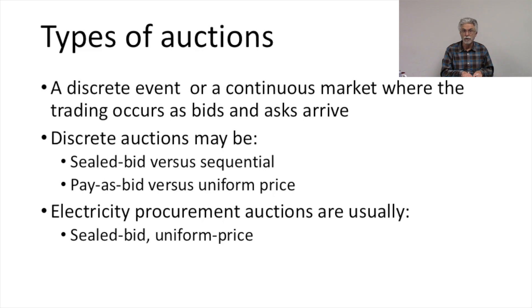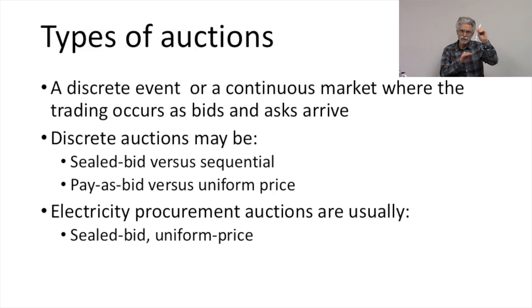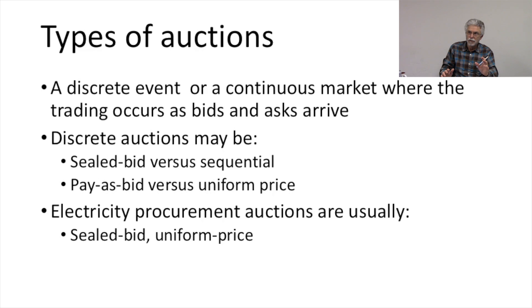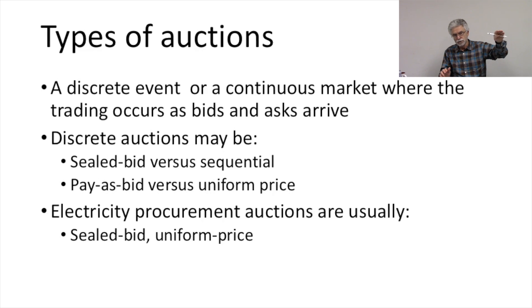So a uniform price auction is often preferred in these settings because firms have more incentive to bid closer to their marginal cost — their actual values — rather than trying to guess the outcome and bid as close as they can to it. Firms will instead bid honestly their true values and then get paid according to the market price. Electricity procurement auctions tend to be sealed bid uniform price auctions, and the key advantage is that bidders have a strong incentive to bid their actual values rather than guess at the closing price.